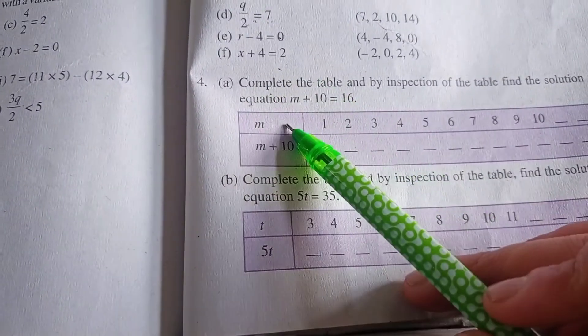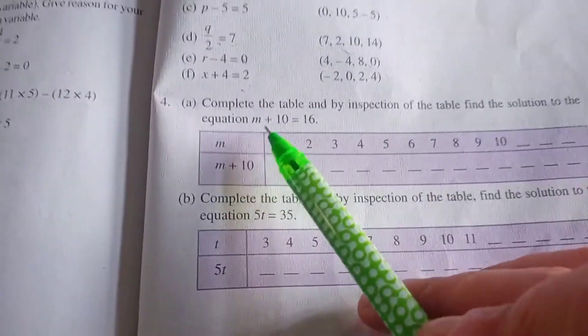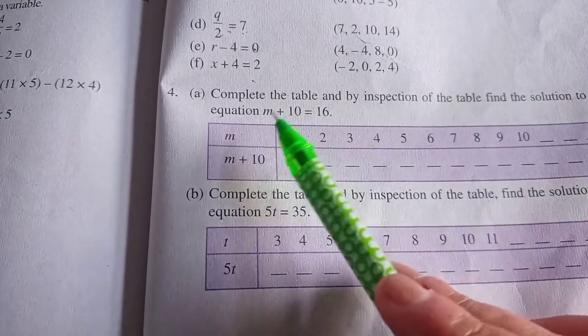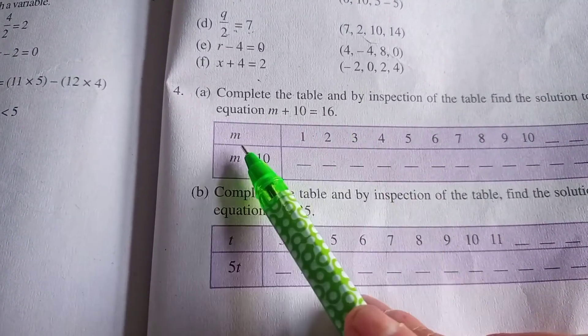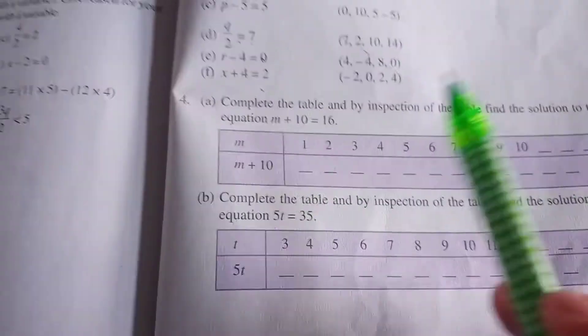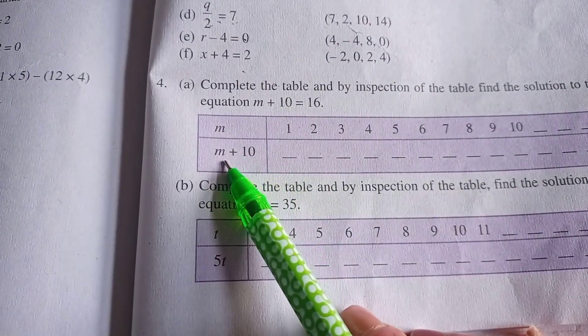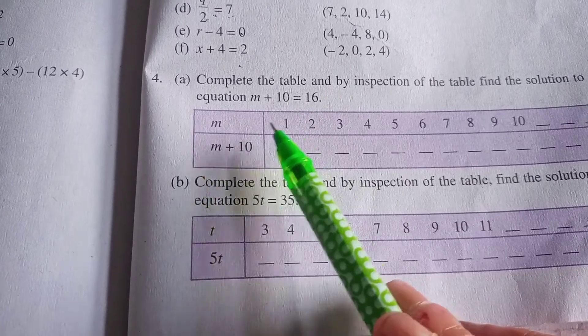Exercise 11.5, question number 4, part a. Here they are saying complete the table and by inspection of the table find the solution. Different values are given for m, and we have to substitute them and see which value gives us 16.